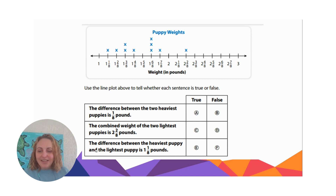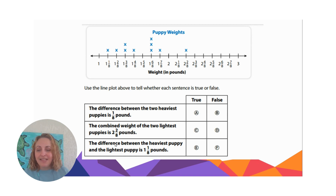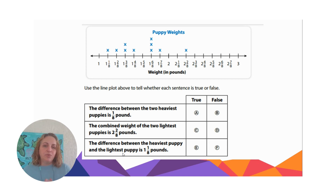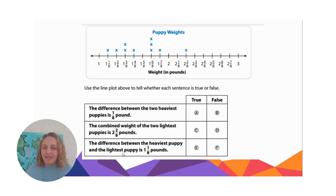Last one: the difference between the heaviest puppy and the lightest puppy is one and one eighth pounds. Go ahead and do that subtraction. When I do two and two eighths minus one and one eighth: two eighths minus one eighth equals one eighth, and two minus one equals one. So that one is true — the difference is one and one eighth pounds. That means the heaviest puppy is twice as heavy as the lightest puppy!